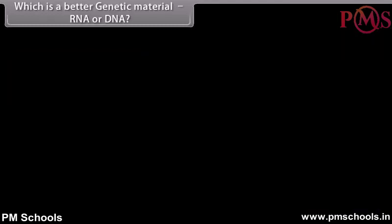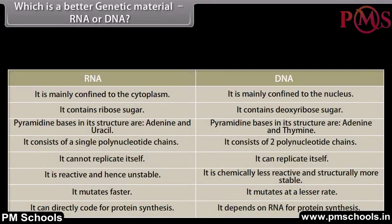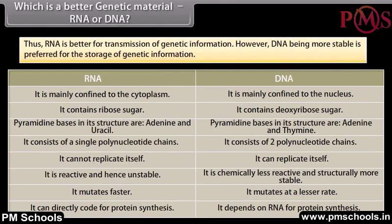Which is a better genetic material — RNA or DNA? RNA is better for transmission of genetic information. However, DNA, being more stable, is preferred for the storage of genetic information.